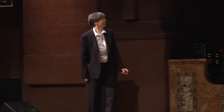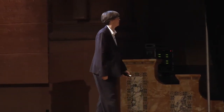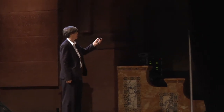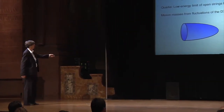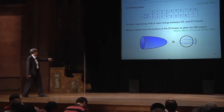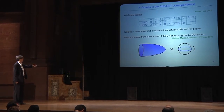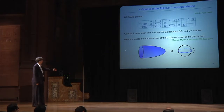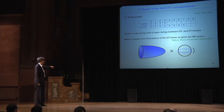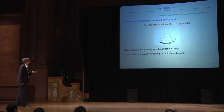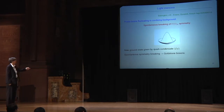Let me move on to my next example about quarks and the AdS/CFT correspondence, with renewed interest from new lattice gauge theory results. Consider a probe D7-brane model where we take D7-brane probes embedded in a D3-brane background. The quarks are the low-energy limit of open strings between the D3 and D7-branes. The meson mass is obtained from fluctuations of the D7-brane as given by the DBI action: this is a cartoon of anti-de Sitter space with the S^5, the blue object is the D7-brane, it can fluctuate, and the energy eigenvalues give you meson masses.